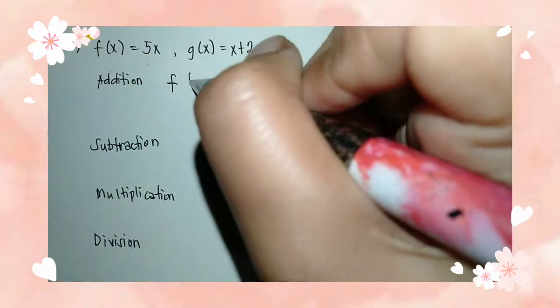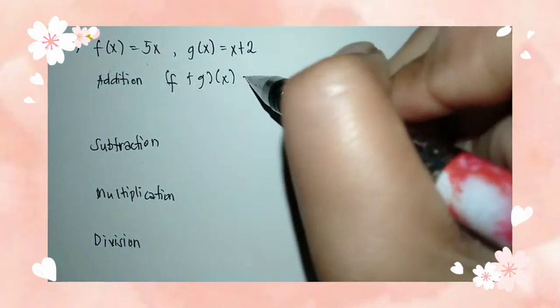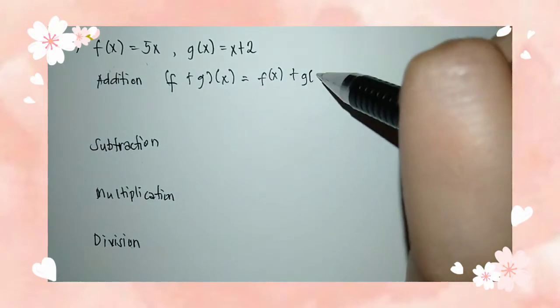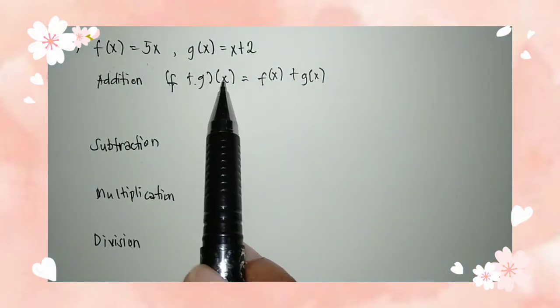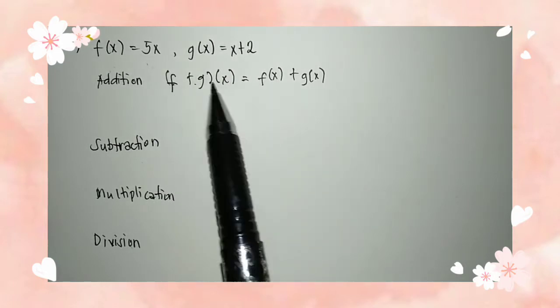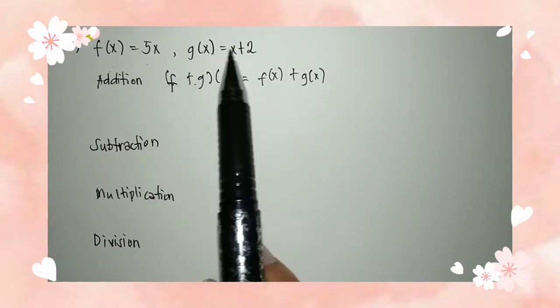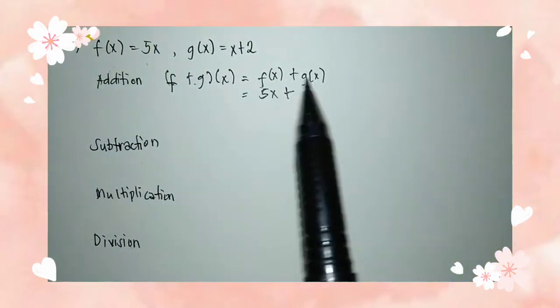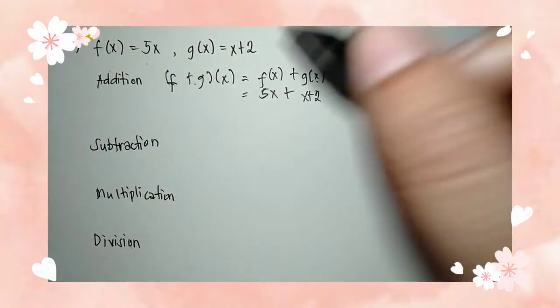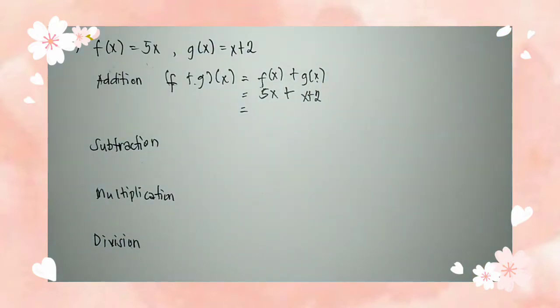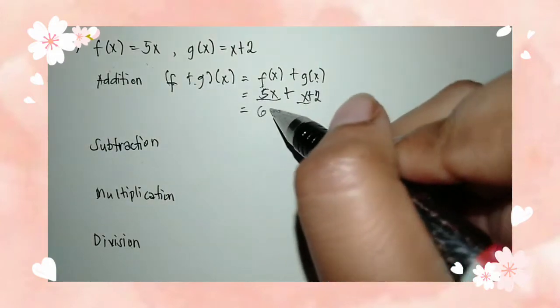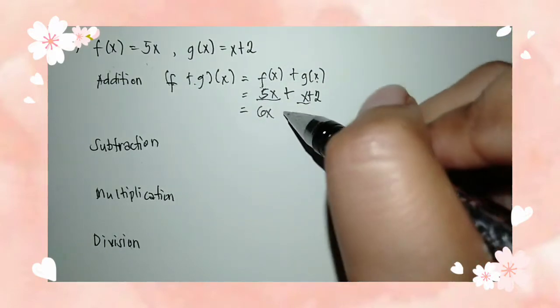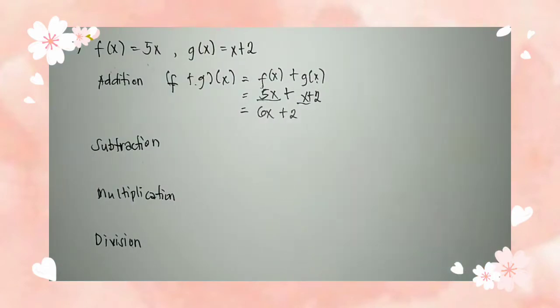Let's go first with addition. We have f plus g of x is equal to f of x plus g of x. So we have f of x is equal to 5x plus g of x is equal to x plus 2 — we're just going to add those functions. The next step is to combine the like terms. Since 5x and x are the like terms, we have 5x plus x is equal to 6x. And since 2 has no like term, we just copy it. So 6x plus 2 is the answer.